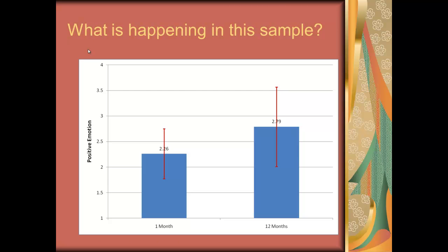We can talk about what's happening in this sample — what does that data tell us? Here we see a bar graph of the data at 1 month and 12 months. It may actually be a line graph since time is a continuous variable. The height of the blue bars indicates the mean: 2.26 at one month, 2.79 at 12 months. The y-axis runs from one to four, the possible values of the dependent variable. The red error bars represent one standard deviation above and below the mean.